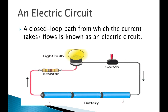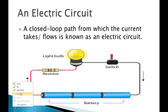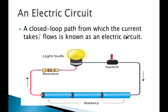Now we need to understand what is a circuit. We say that current will flow in the circuit or current will not flow in the circuit. So what is actually an electric circuit? An electric circuit is such a path in which the current will flow, and the path should be closed.